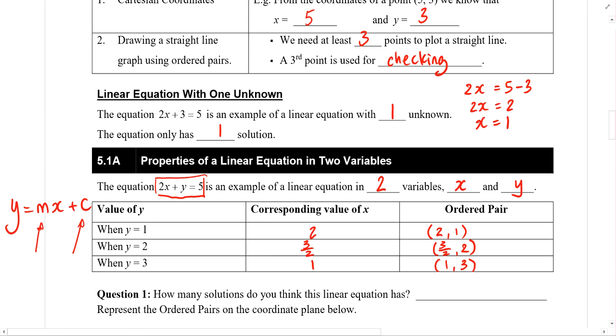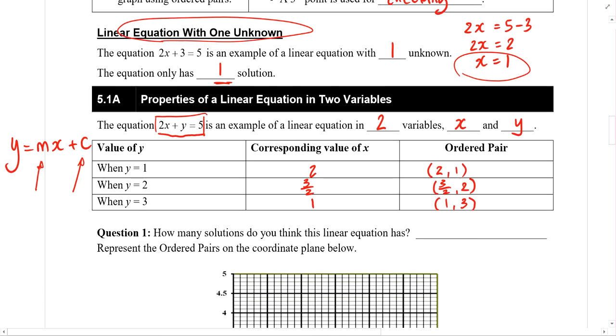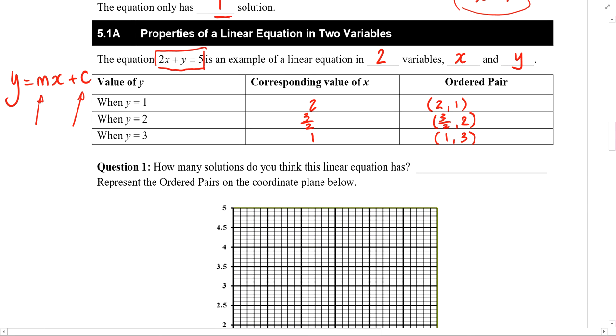What do we mean by the solutions? Recall, in the linear equation with only one unknown, there is only one solution, and that one solution is x equals to 1. There were no other values of x for which the equation is true. So let's take a look at here, our linear equation in 2 variables. Is there only 1 value of x for which the equation is true? We have just shown you 3 different values of x with 3 corresponding values of y such that the equation is true.